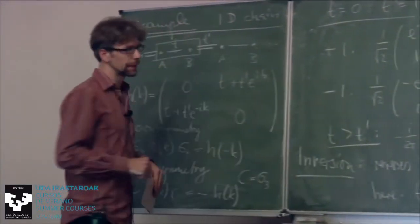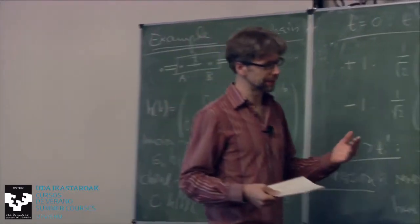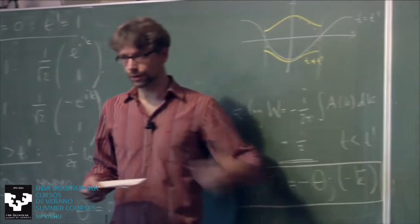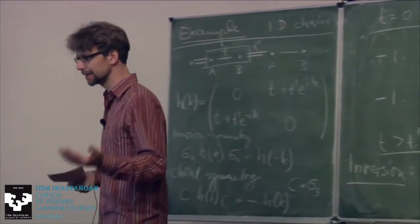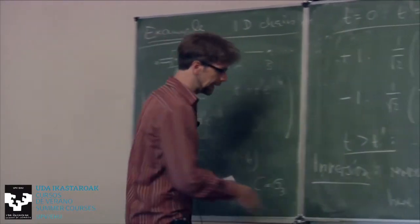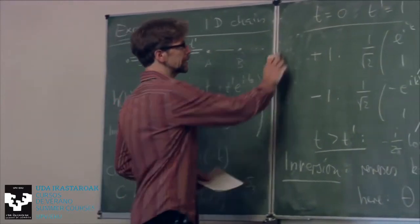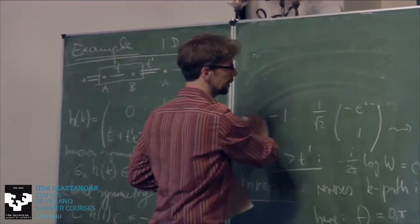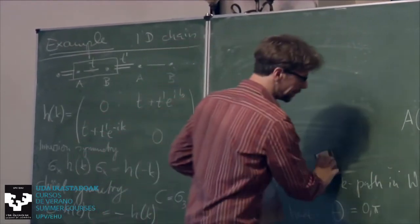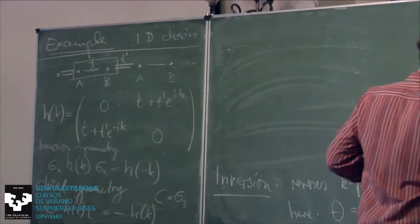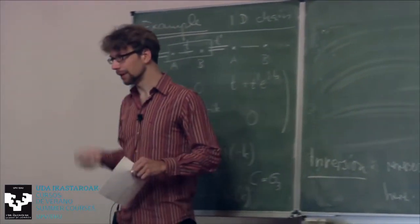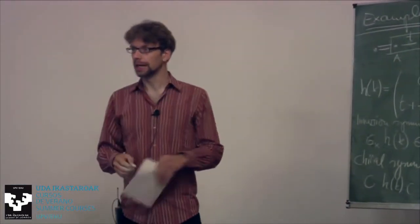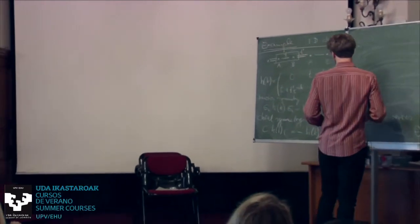What is the role played by symmetries here? We found a polarization quantized by inversion symmetry. But all of a sudden I'm talking about an end state, and you might think this is topological. For that to be true, we actually have to invoke chiral symmetry. There are two things to carefully distinguish: the quantized dipole moment in the bulk, quantized just by inversion symmetry, and the presence of an end state.